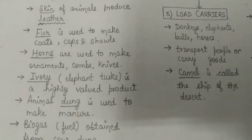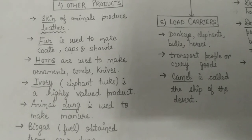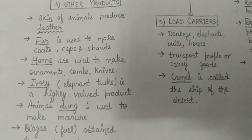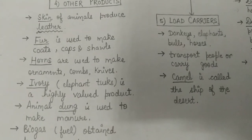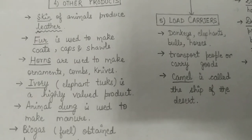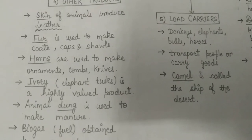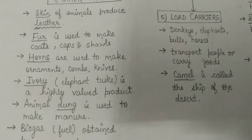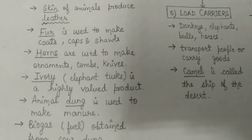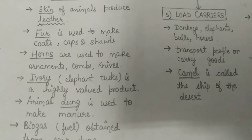See how the different parts of animals are useful to us. We discussed skin and fur. Next comes horn. Horns of some animals are used to make ornaments, combs, knives, and many decorative items. One thing to note: squirrel hair was earlier used to make hair brushes and paint brushes, but now it is not permitted by law.